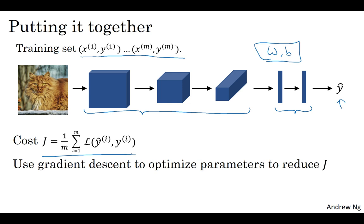in order to optimize all the parameters in the neural network to try to reduce the cost function J. And you find that if you do this you can build a very effective cat detector or some other detector.